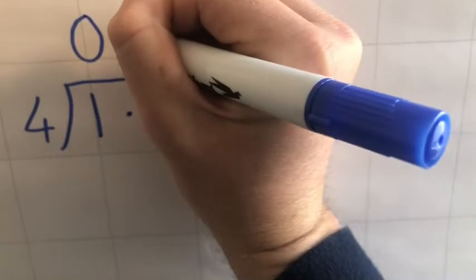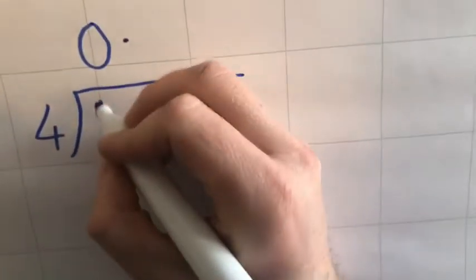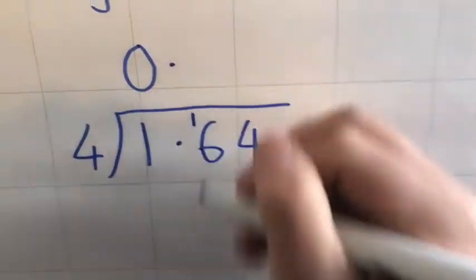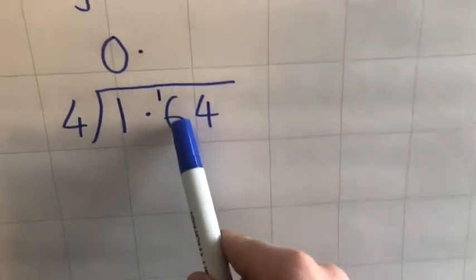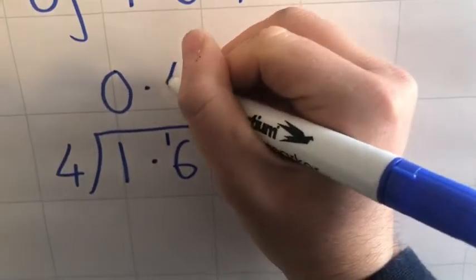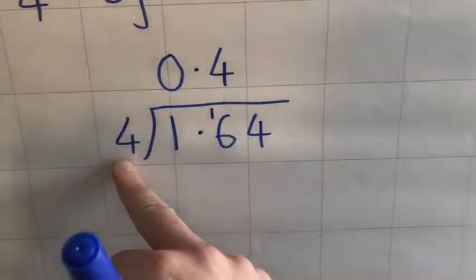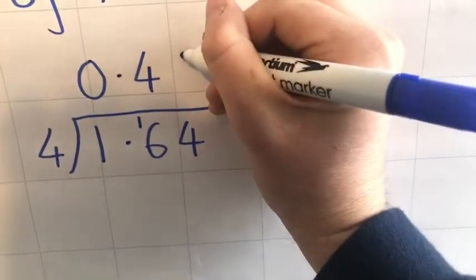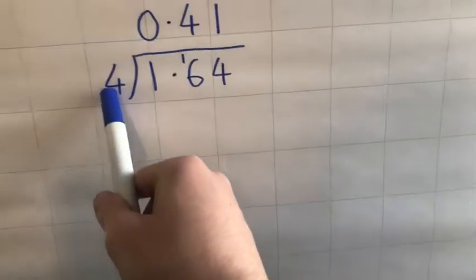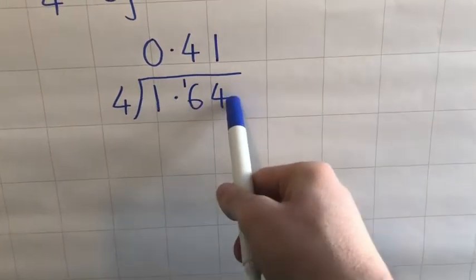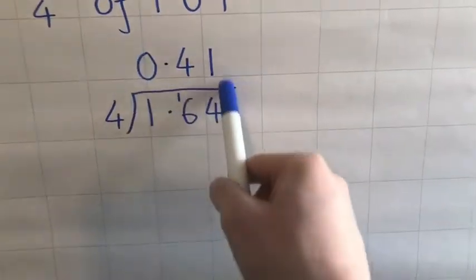Decimal point's going to stay there. Remainder one, okay. So we've now got sixteen. Fours into 16 go four. Fours into four go one. So I know now that one quarter of 1.64 is 0.41.